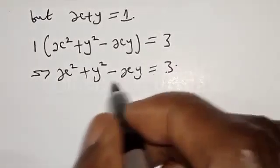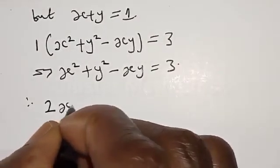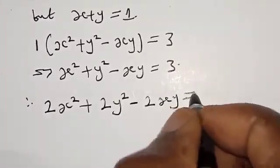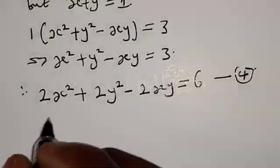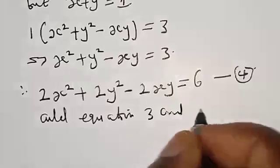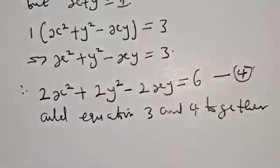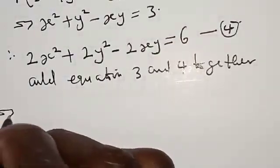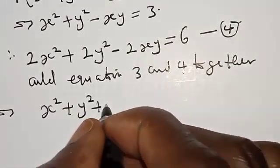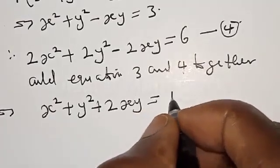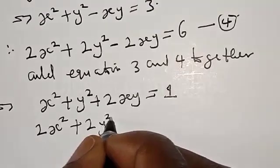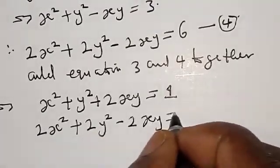Now let's multiply all through by 2. We have 2s squared plus 2y squared minus 2sy equal to 6. Let's call this equation 4. The next thing is to add equation 3 and equation 4 together. Equation 3 is s squared plus y squared plus 2sy equal to 1.